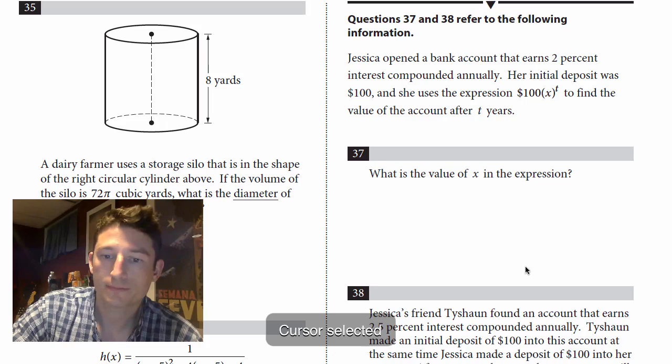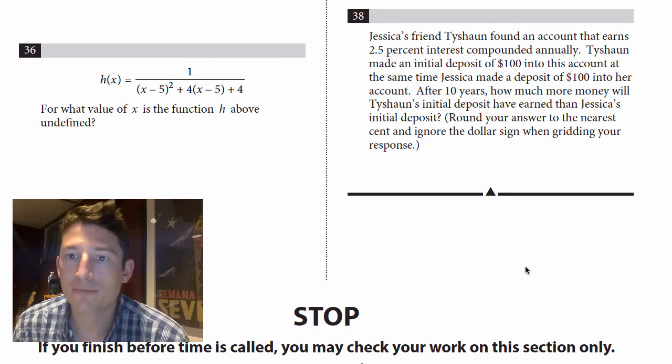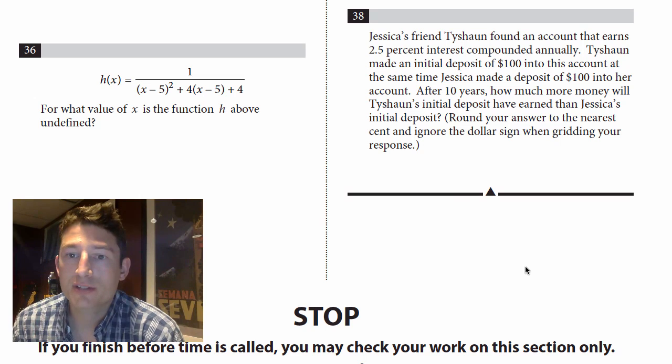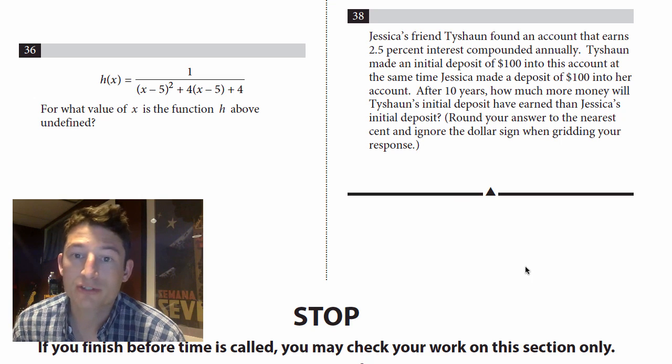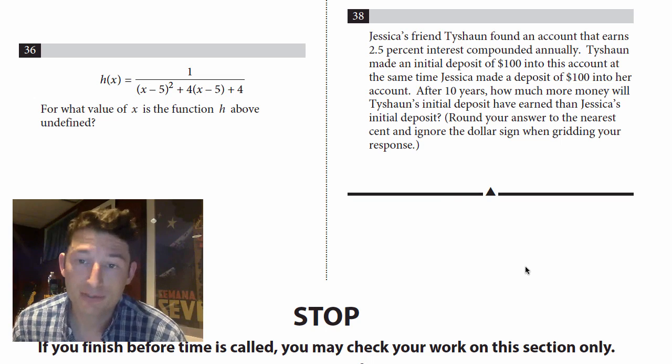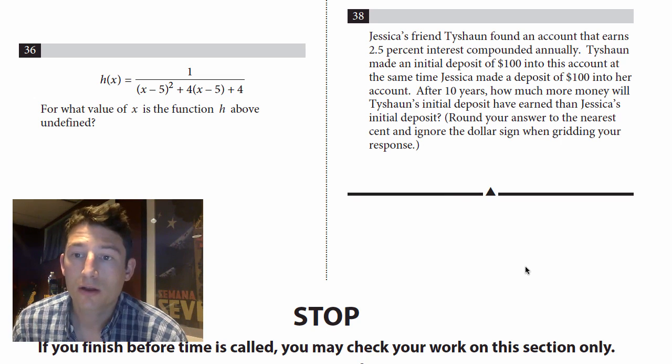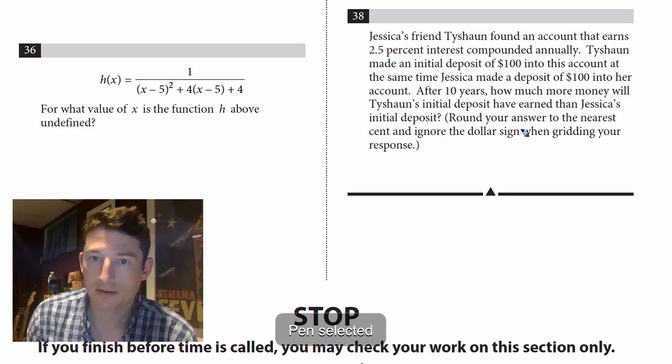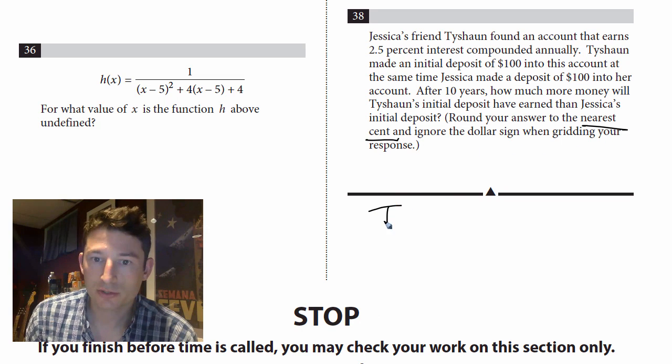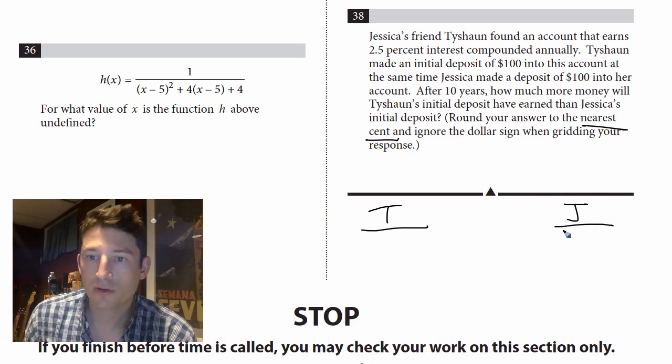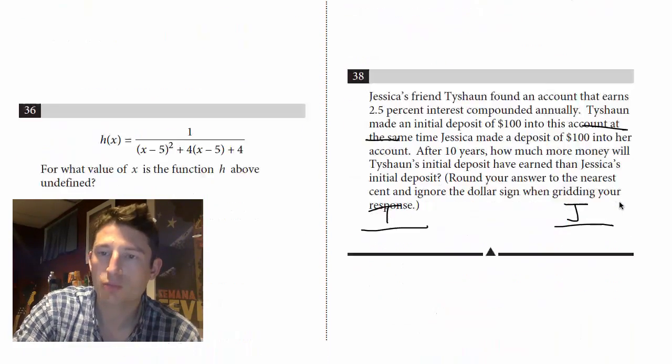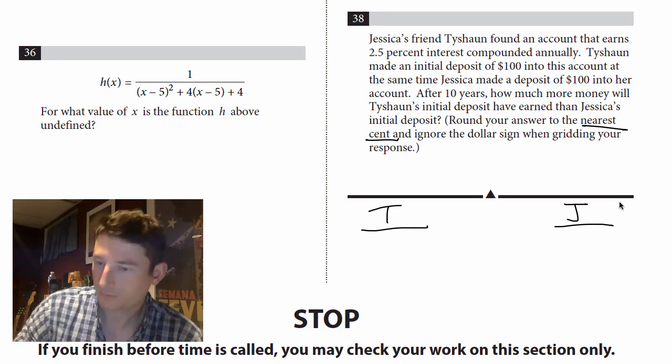Number 38. Jessica's friend Tyshawn found an account that earns 2.5% interest compounded annually. Tyshawn made an initial deposit of a hundred dollars into this account. At the same time, Jessica made a deposit of a hundred dollars into her account. So they're probably going to ask us to compare the two after 10 years. How much more money will Tyshawn's initial deposit have earned than Jessica's initial deposit? Round your answer to the nearest cent. Well, we basically just need two equations, right? And we got to round to the nearest cent. So I'll do Tyshawn's is over here and Jessica's is over here. And you'll just have to excuse me. I want to move up here. What was her thing? A hundred. What did we say? It was a hundred 1.02, right?